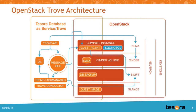Basically, what happens when you run a Trove create command, or through the Horizon dashboard if you click on create a Trove instance, we will pull an image from Glance, we will spin up that image on Nova, and then we will talk to a guest agent which is built into the image. That guest agent will then, according to the configuration, provision a database instance for the user.